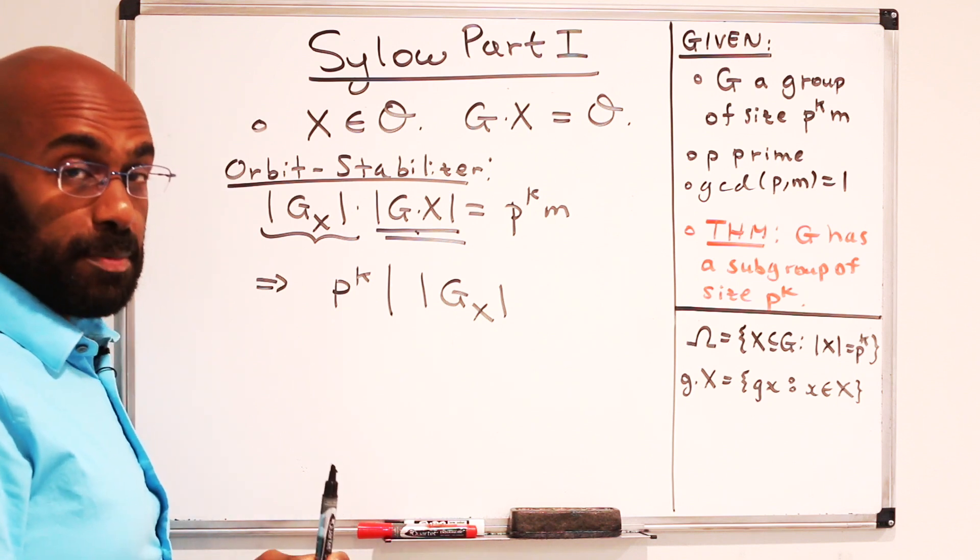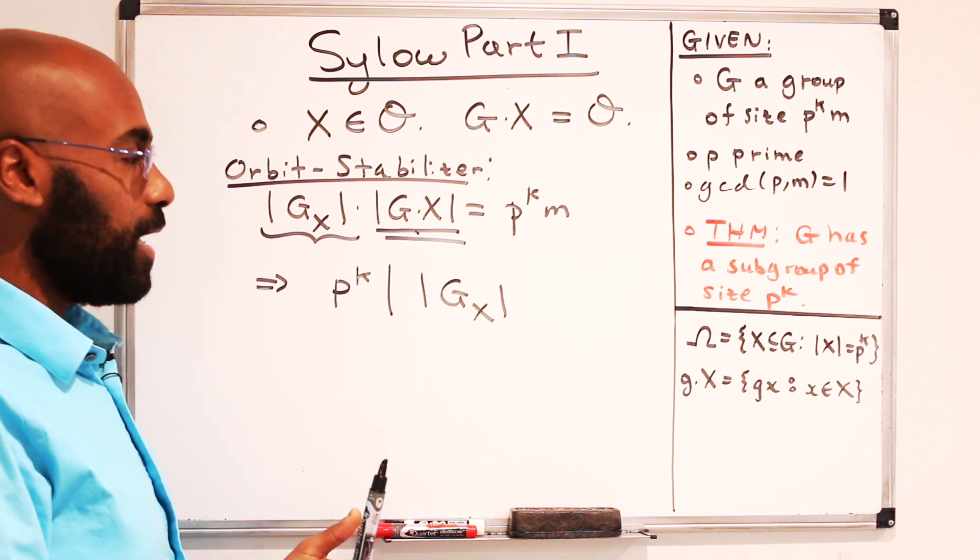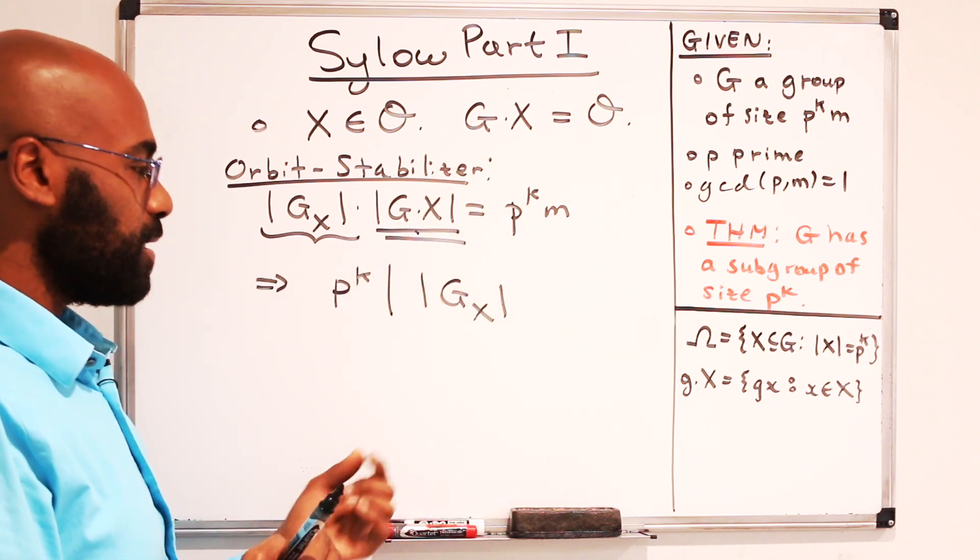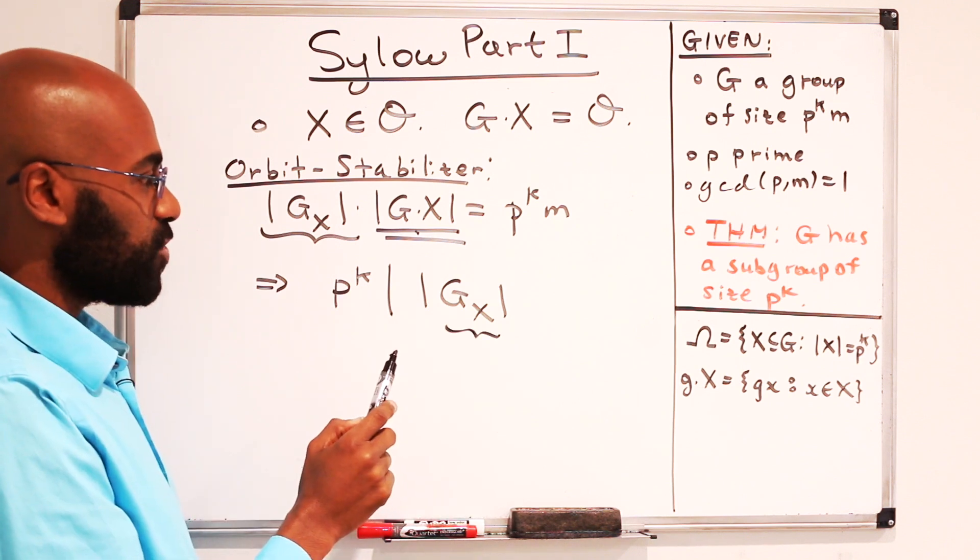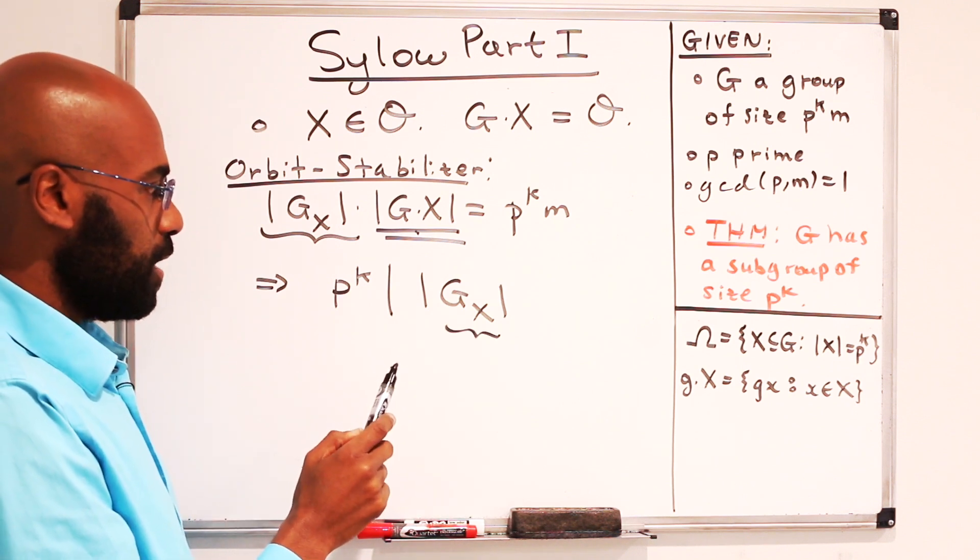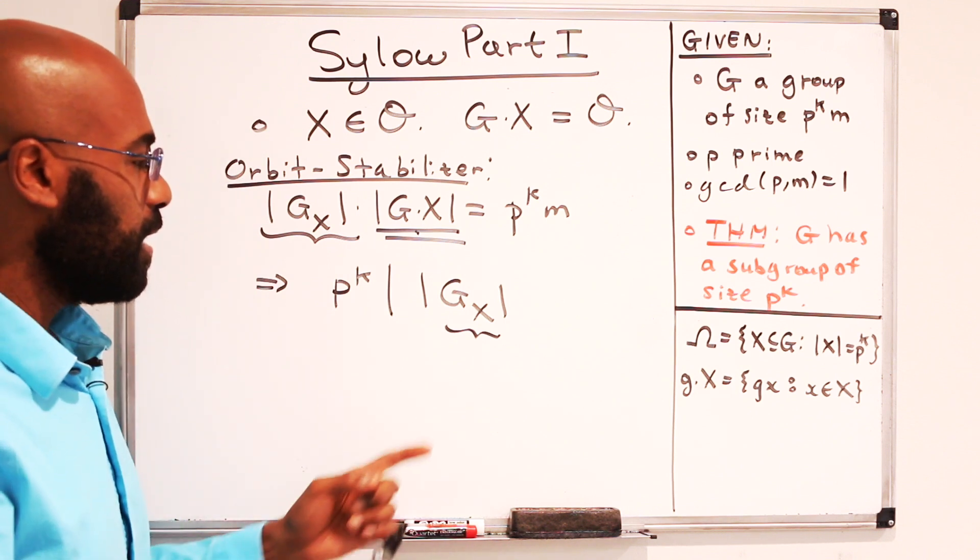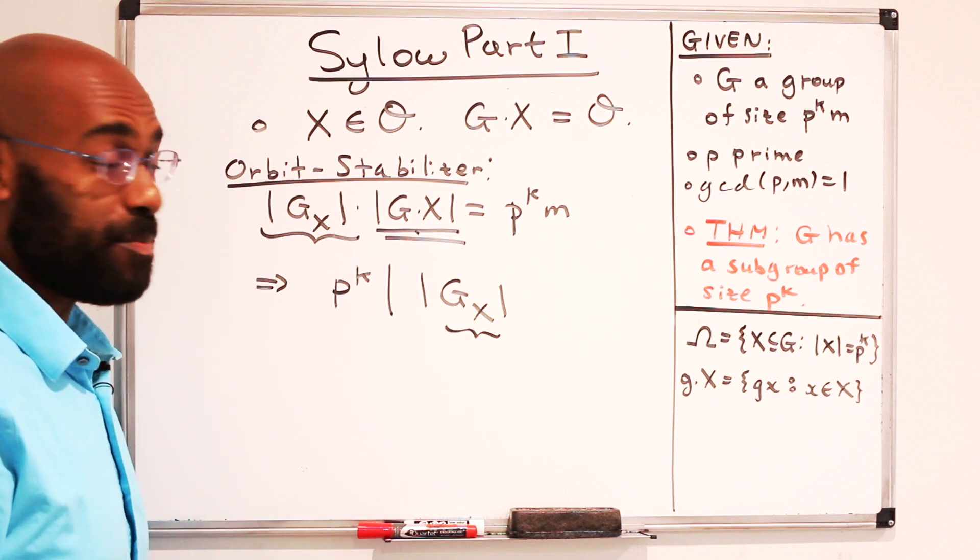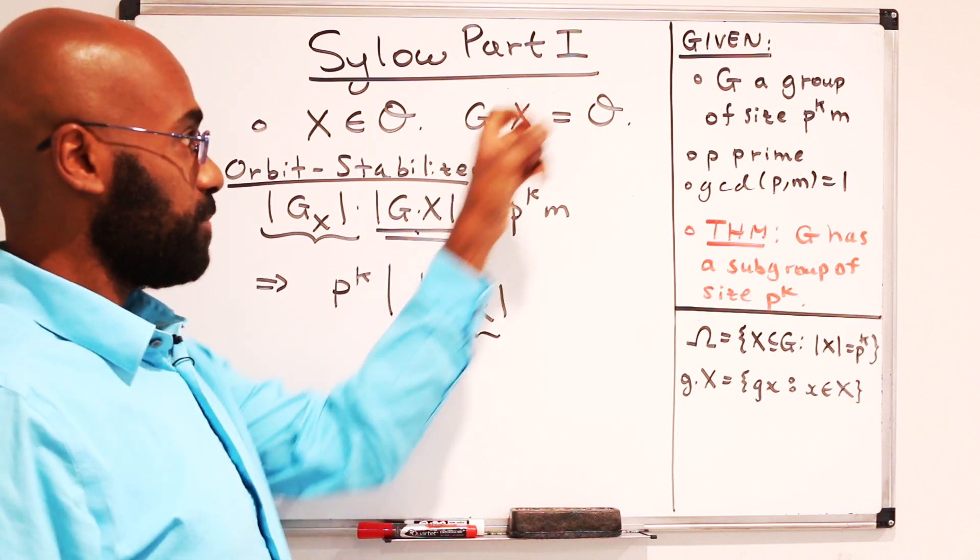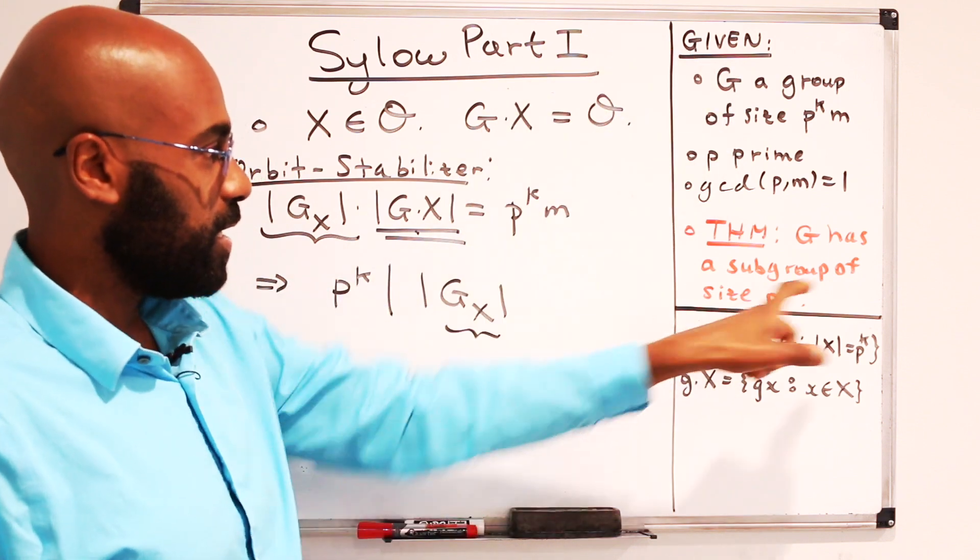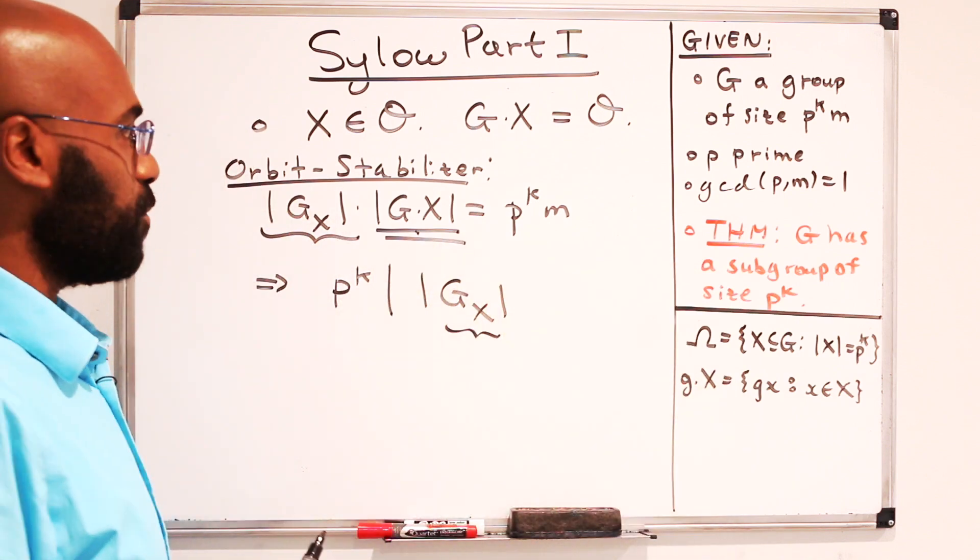Interesting. Now the stabilizer itself is a subgroup of G. It's the set of elements in the group G that, under our action, fix the set X itself. So here now we have a subgroup, the stabilizer of X, whose size divides this p to the k. What we're going to prove is, in fact, that the size of this stabilizer happens to be exactly p to the k. And consequently, this stabilizer, which is a subgroup of the group G, is a group of the size that we're interested in. So we're going to save some of this data here and go ahead and explore that.